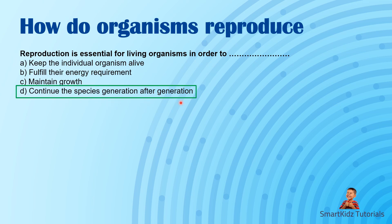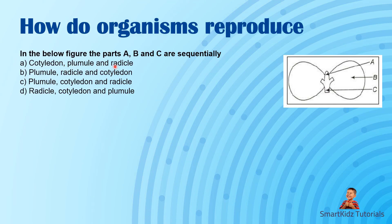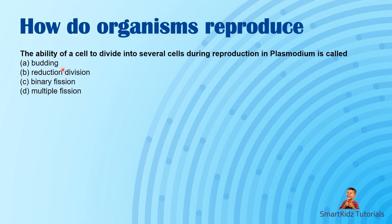Reproduction is essential for living organisms in order to continue the species generation after generation. In the figure, parts A, B, C are sequentially labeled. A refers to plumule, B refers to cotyledon, and C refers to radicle. The radicle will go on to form the roots and the plumule will form the shoot.